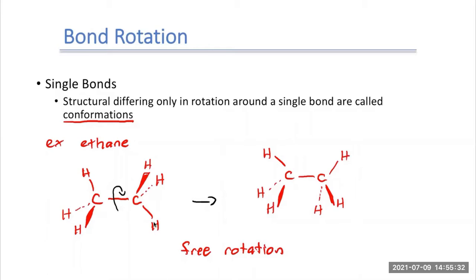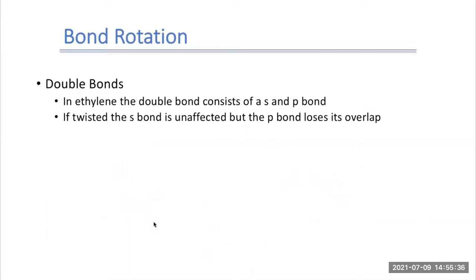We tend to see free rotation a lot with single bonds. With double bonds, however, we don't get that free rotation, because a double bond contains a sigma bond and a pi bond. So if we draw out ethylene, for example, this double bond locks its two carbons in place.